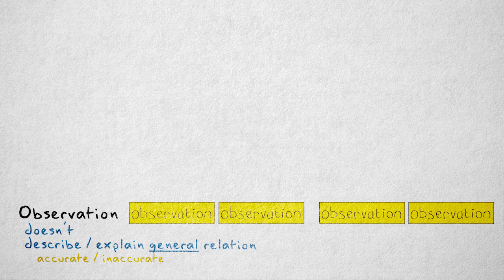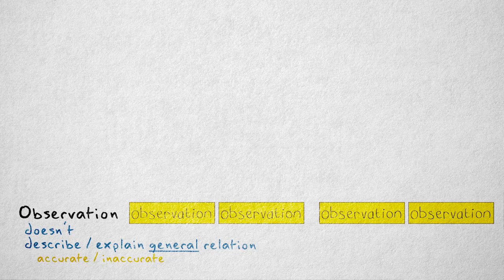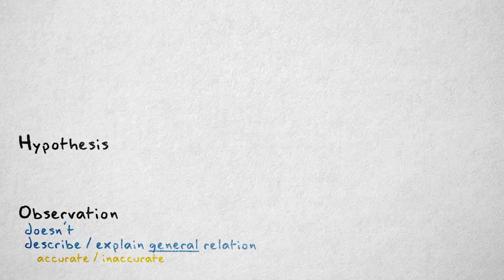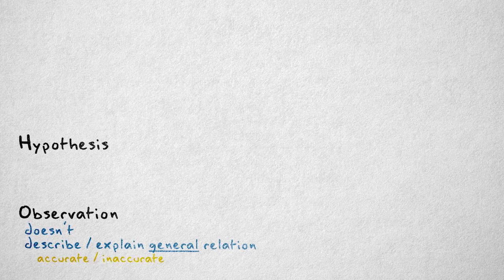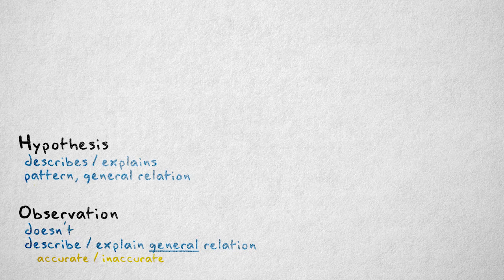Observations become useful when they're used to confirm or contradict a hypothesis. A hypothesis is a statement that describes a pattern or general relation between properties. A hypothesis can also explain the pattern that it describes.